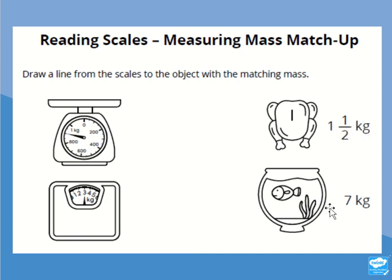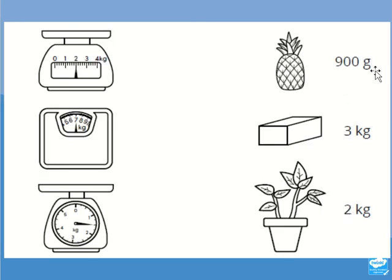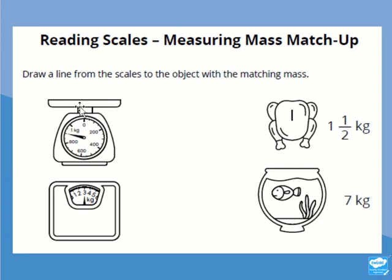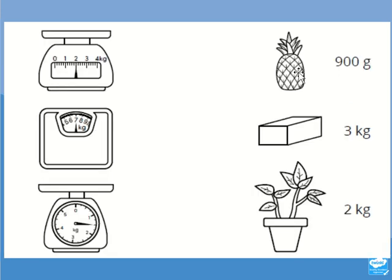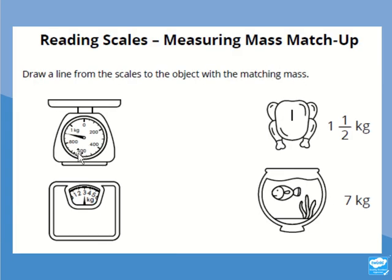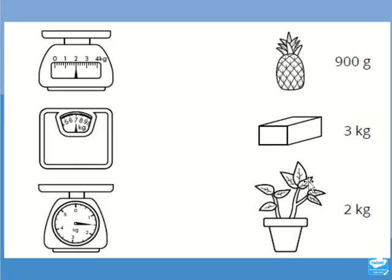We need to find 900 grams on the right-hand side — there it is, a pineapple is 900 grams. So the pineapple matches this scale and you draw a line to connect them. The next scale shows 1, 2, 3 in kilograms — the needle is pointing to 3 kilograms. Looking at the objects on the right, it's not the chicken, not the fish in the bowl, not the pineapple — this block is 3 kilograms, so you match it up.